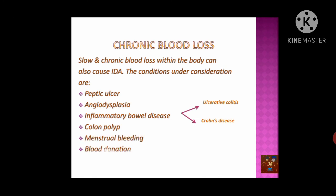Menstrual bleeding is another cause: women of childbearing age who experience menorrhagia — heavy menstrual flow — have a higher risk of iron deficiency anemia. Regarding blood donation, when a person donates whole blood, almost 200 milligrams of iron is lost per donation, so sufficient iron supplementation is required afterward. When donating only plasma, WBCs, or platelets, iron deficiency anemia does not occur to the same degree.